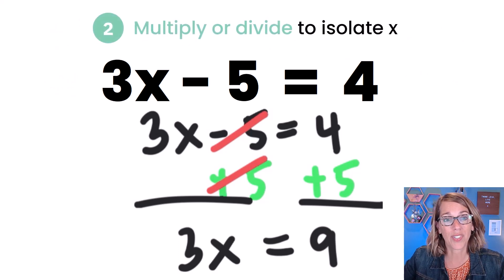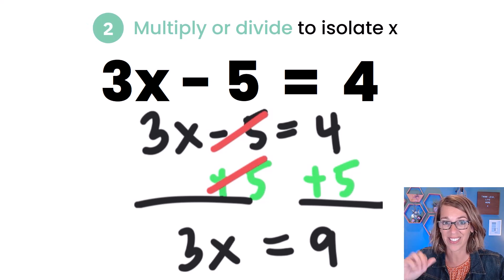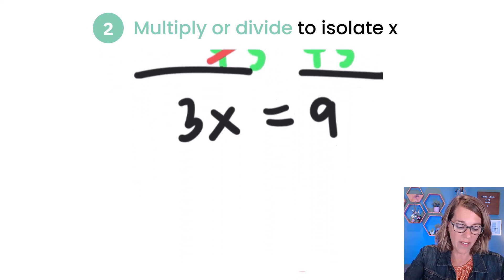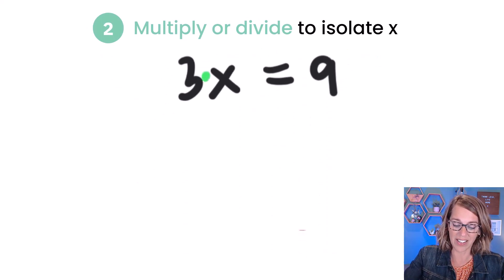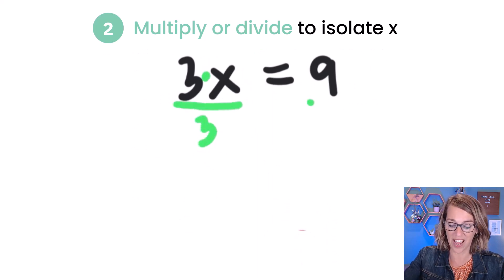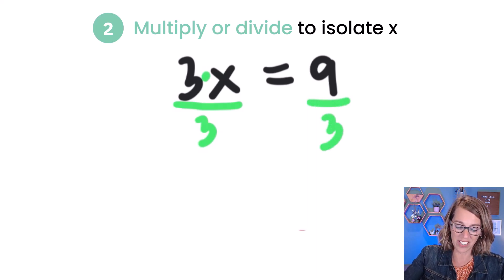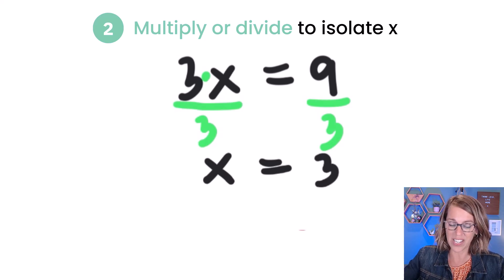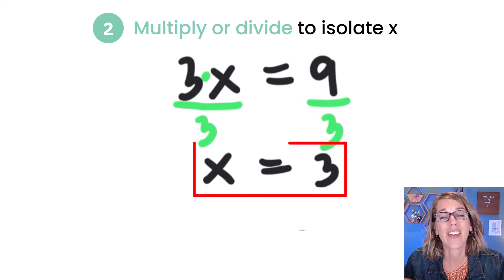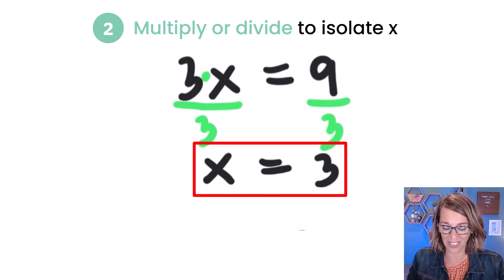So we're ready for step number 2, which is to multiply or divide to get x all by itself. Right now I've got 3 times x, so I'm going to divide by 3 on both sides — so 9 divided by 3 as well. I can cancel those 3s and I get just x on the left. 9 divided by 3 is equal to 3. And I've got my solution x equals 3.